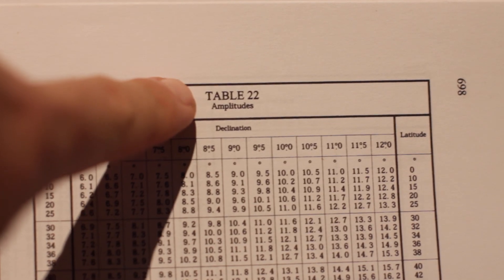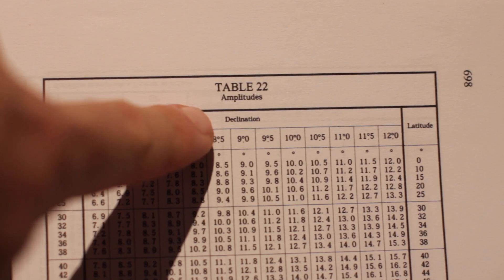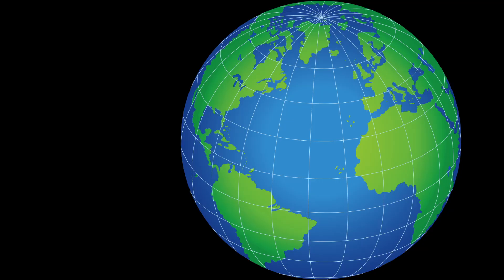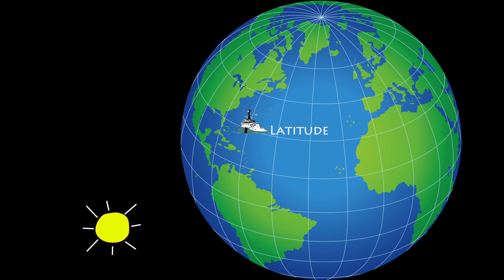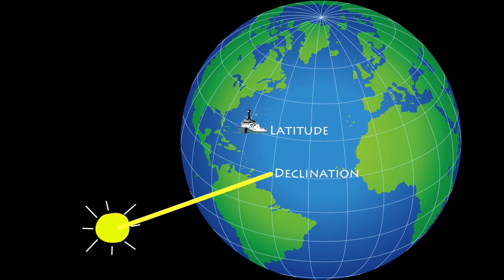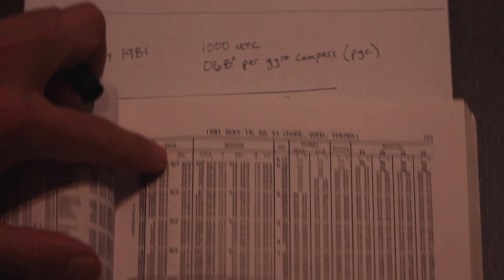For our second problem, Bowditch says we need latitude and declination in order to get an answer. Latitude is easy — that's just the ship's latitude. Declination is the latitude of the spot on earth where the sun is directly overhead. This spot changes over the course of the day but it can be measured. Declination is simply the latitude of the sun and we can find it in the nautical almanac in the declination column.